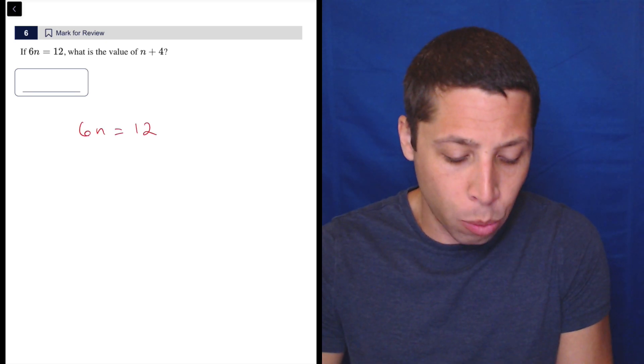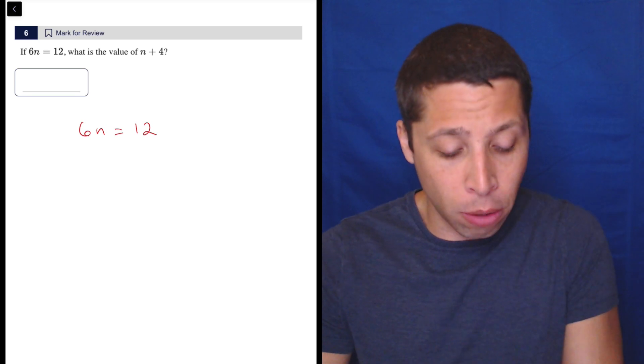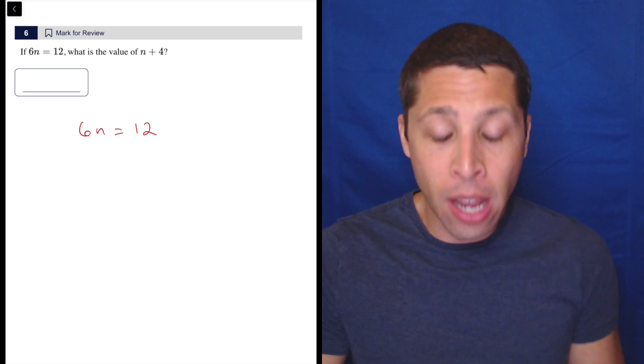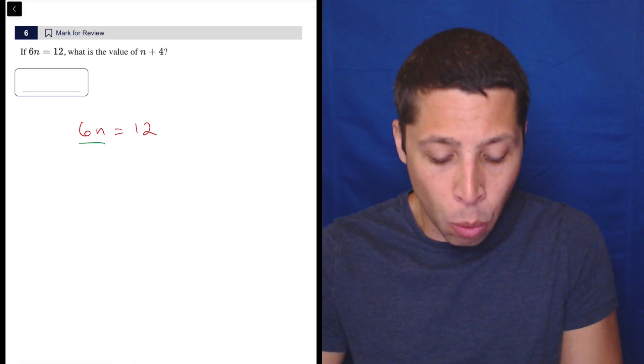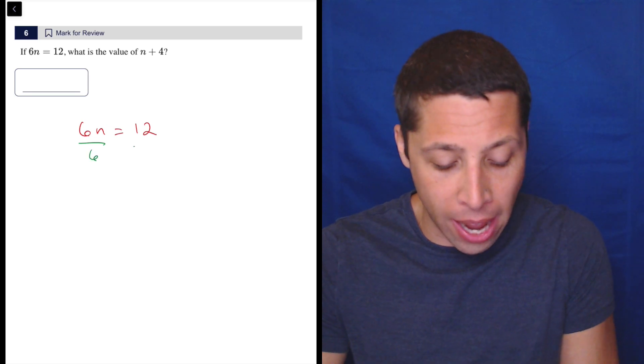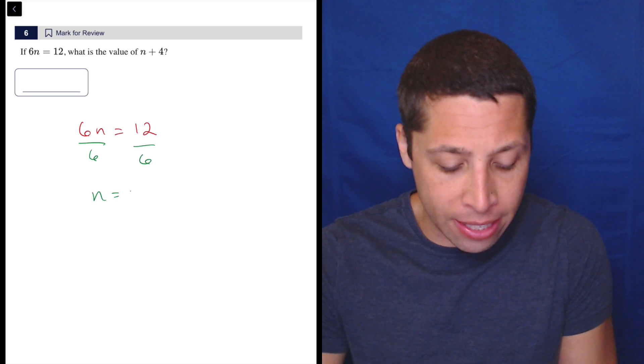So 6n equals 12. Habit is probably going to kick over and you're going to start to solve for n. We have 6 times n. What undoes multiplication? We're going to divide and so we're going to get that n is equal to 2.